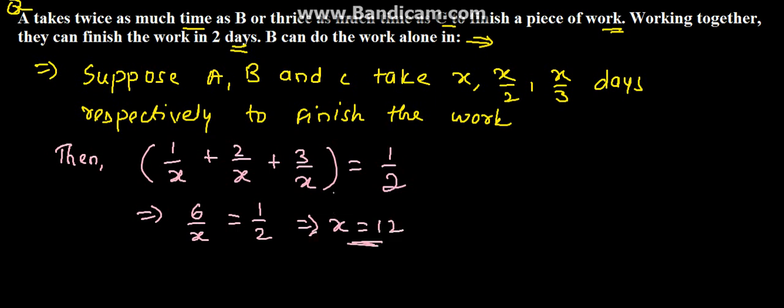We have derived the value of 12. So, we can come to the conclusion that B takes 12 by 2, which is equal to 6 days to finish the work.